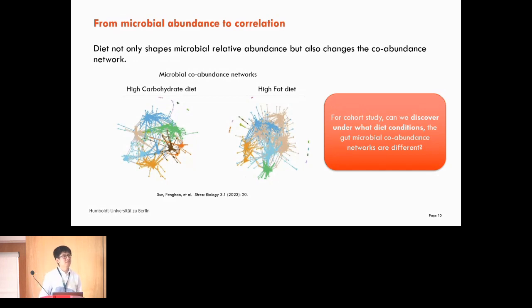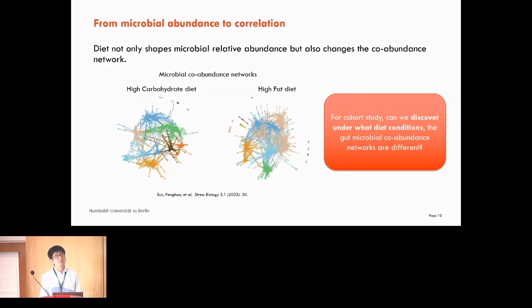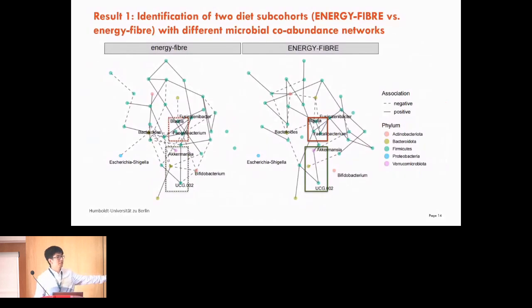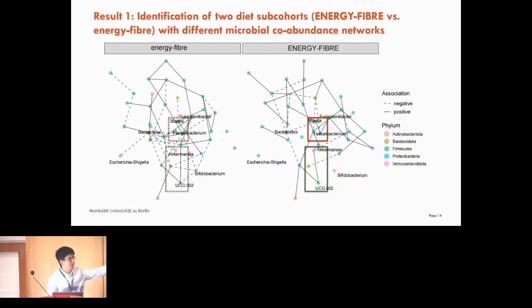Another audience member asks what it means for health that these networks are very different. The speaker explains: their previous results show that Faecalibacterium and Blautia are important bacteria for Parkinson's disease. What they observe here is that these two bacteria co-work together in the high fiber group, potentially producing something important for health. But in the low fiber intake group, their correlation is not high, suggesting they may not act together as a functional unit.